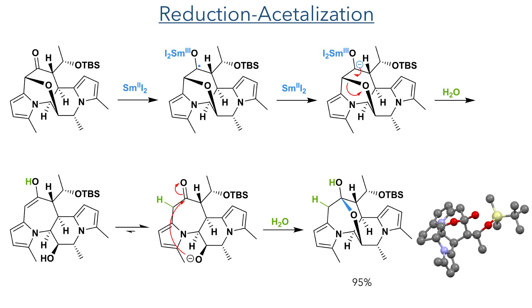Reacting the compound with samarium diiodide first reduces the carbonyl group and forms a radical on the carbon centre. This is reduced once more, forming an anion. This breaks the carbon-oxygen bond and forms an enolate, which is protonated by water present in the reaction mixture. The resulting enol can tautomerise to form the more stable ketone. This is then attacked by the oxygen that was previously present as the ether, forming a hemiacetal in a 95% yield.